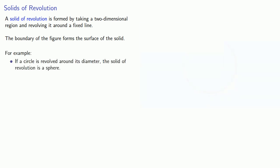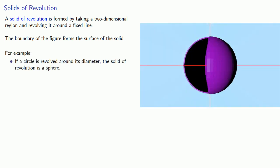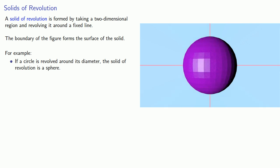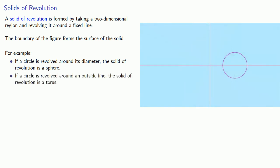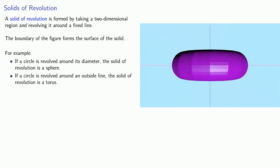For example, if a circle is revolved around its diameter, the solid of revolution is a sphere. But if a circle is revolved around an outside line, the solid of revolution is a torus.